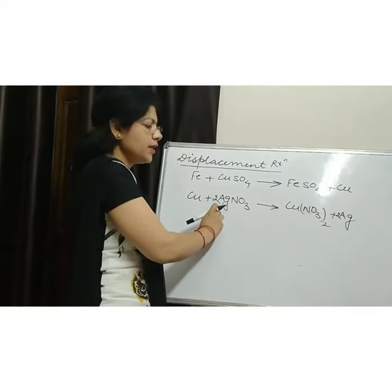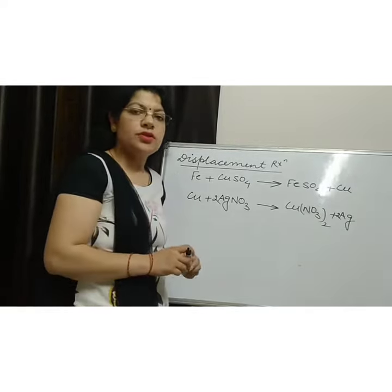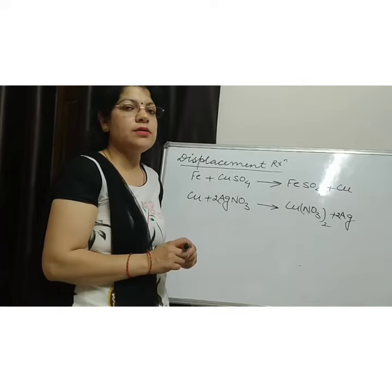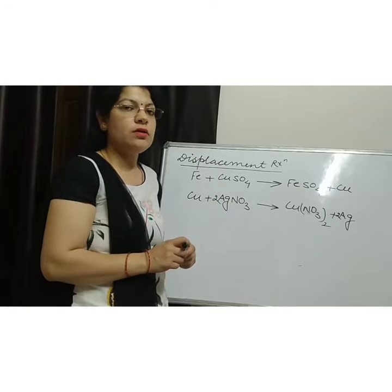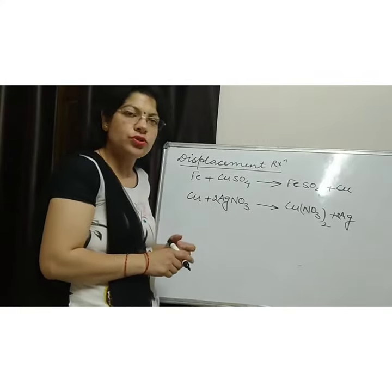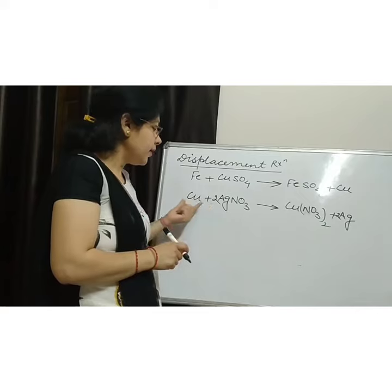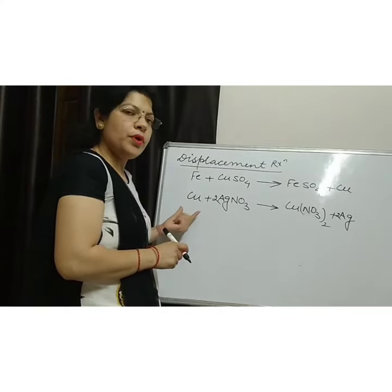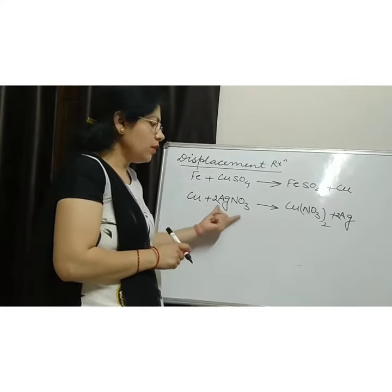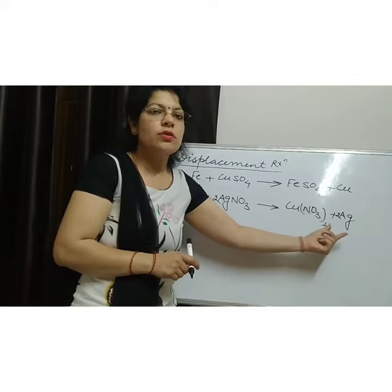therefore it can easily displace Silver metal from its solution. Displacement Reactions are very important in the extraction of different metals from their ore or from their solution. For example, when we want to extract Silver from its solution or from its ore, Silver Nitrate is treated with Copper. Because Copper is more reactive than Silver, therefore it can easily displace Silver from its solution and we can easily extract Silver metal.